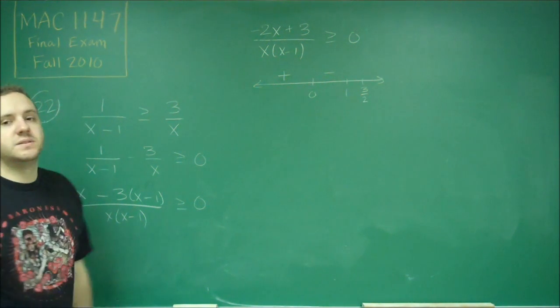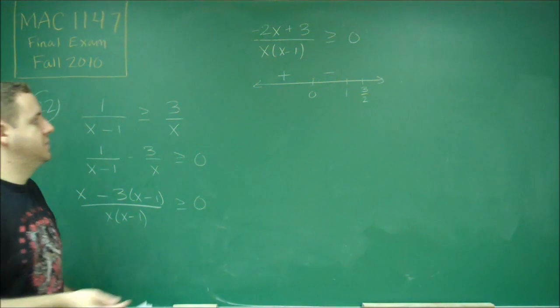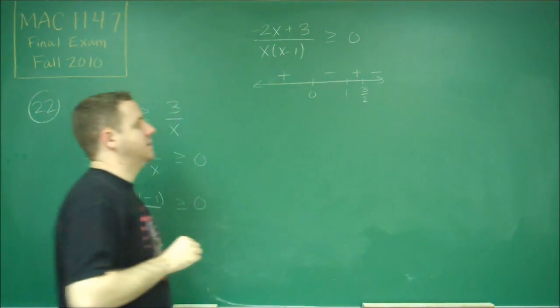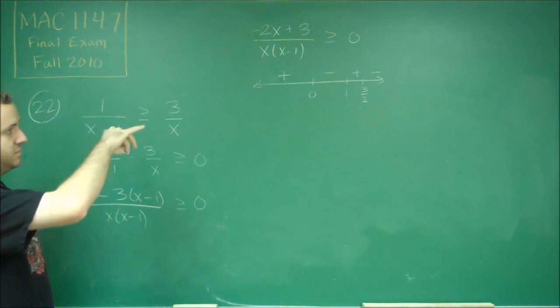You can see that the rest here is going to follow the multiplicity rules. So we're going to have positive and finally negative at the end.